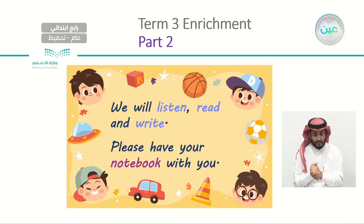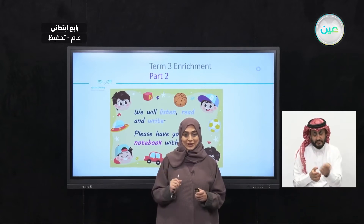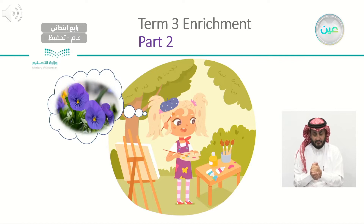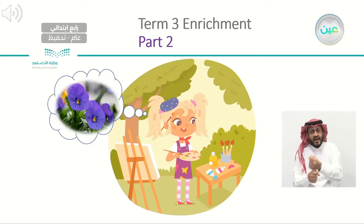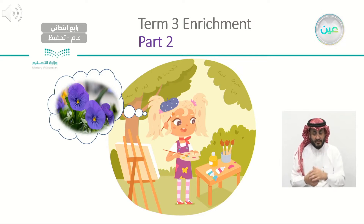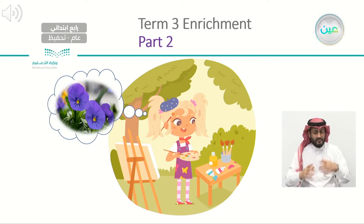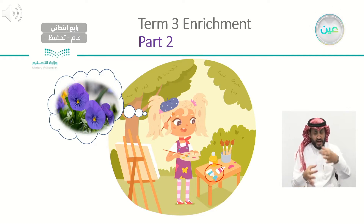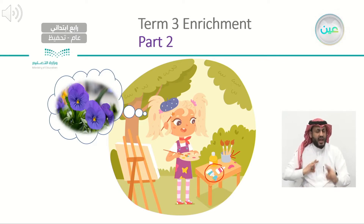So now, boys and girls, we're going to listen, and we're going to read, and we're going to write. This is Lemma. She wants to be a famous artist one day. When she comes back from school, she goes in her room, grabs her art supplies, and goes out to her backyard. Lemma wears a special hat when she paints — it's called a beret. Lemma loves to paint on a canvas. She puts all her paint tubes on the table. The brushes are always in a cup so they don't get lost. Her favorite things to draw are different kinds of flowers, especially violet blossoms.